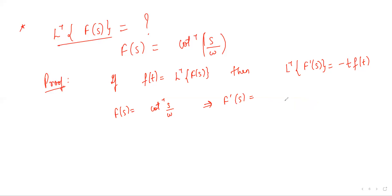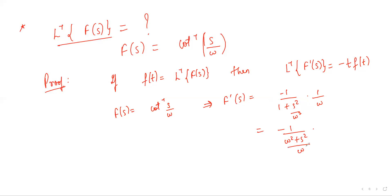The derivative is -1/(1 + s²/ω²) times 1/ω. Taking the LCD, this equals -1/(ω² + s²) times 1/ω, and the ω power gets cancelled, giving us F'(s) = -ω/(ω² + s²).